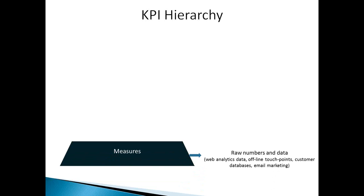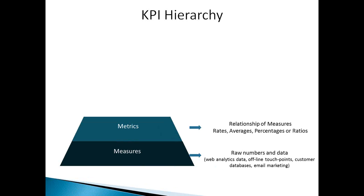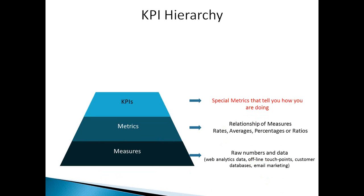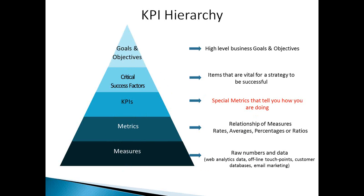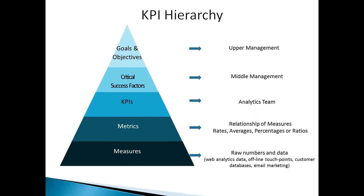If we look at the KPI hierarchy, we start with measures — the raw numbers and data in our reports. These are not KPIs, even though they're so often used as KPIs. When we slice and dice those numbers and look at the relationships between measures, we get the four wrappers. You can have an unlimited number of metrics. Above those we have KPIs — special metrics that tell us how we're doing in our business. Above that we have critical success factors, which are items or activities vital for your strategy to be successful. And if we're doing those right, we may meet our goals and objectives, which are set by high-level management. This hierarchy follows the organizational structure of a company.